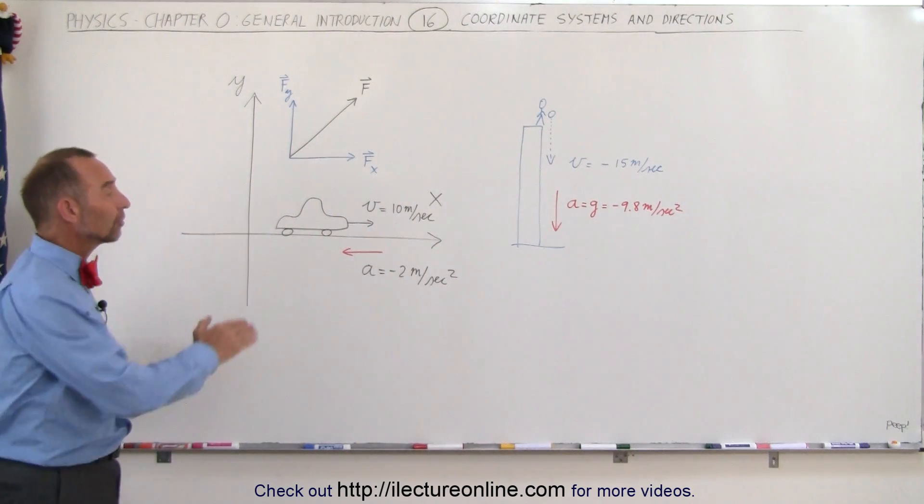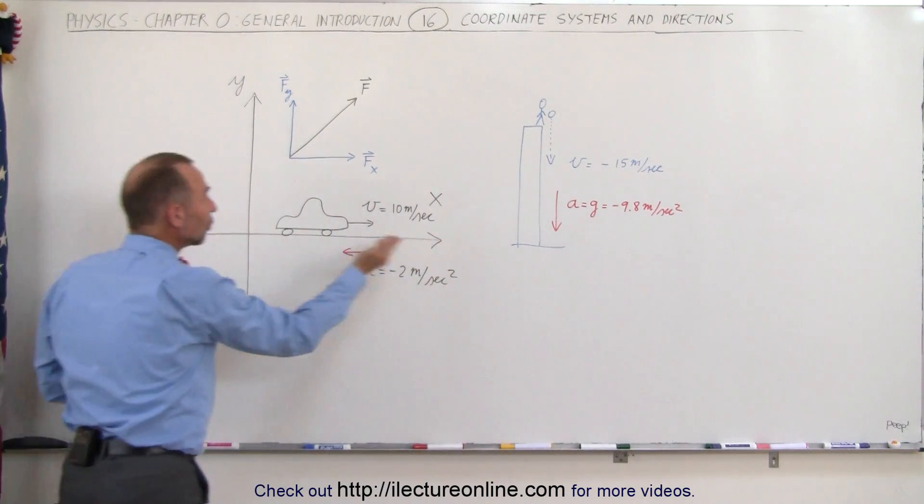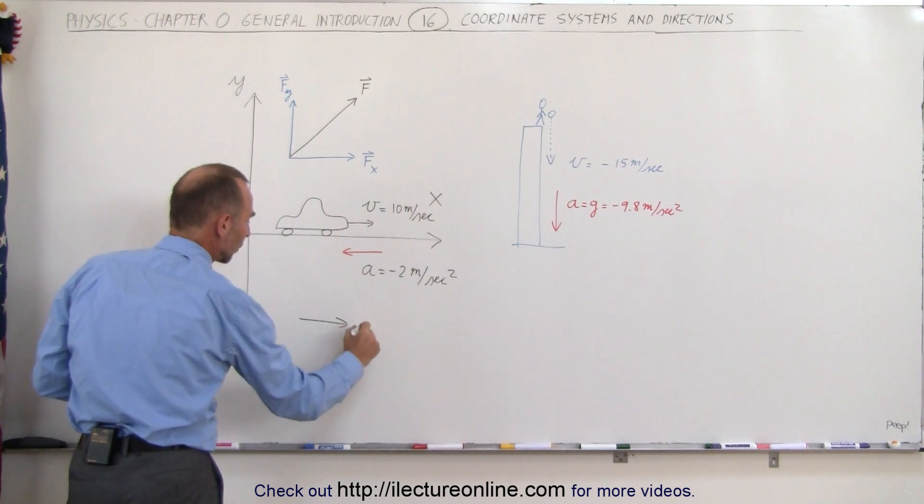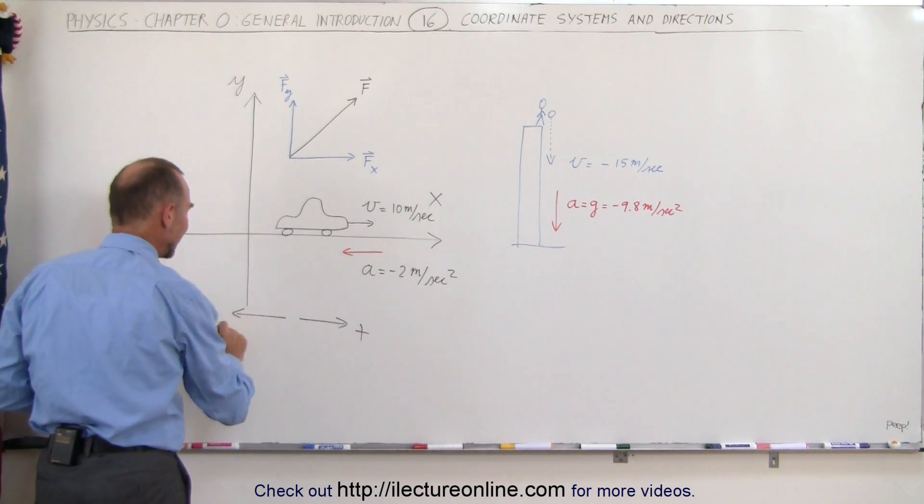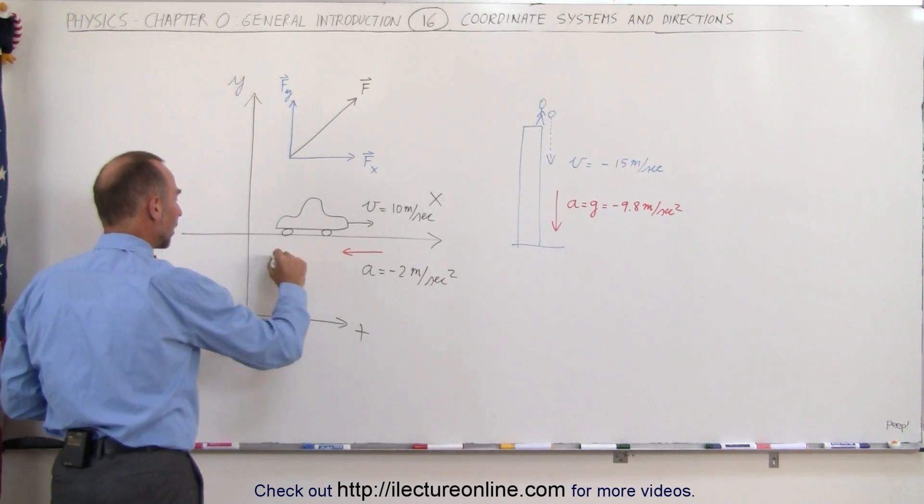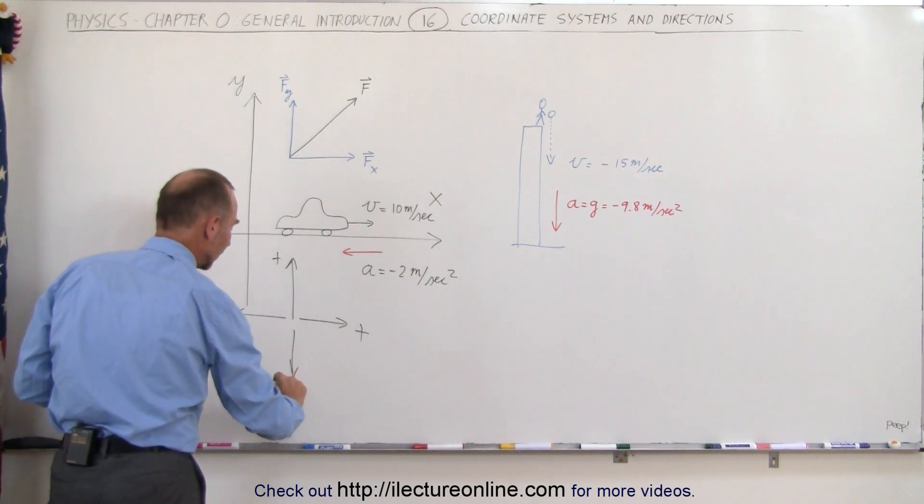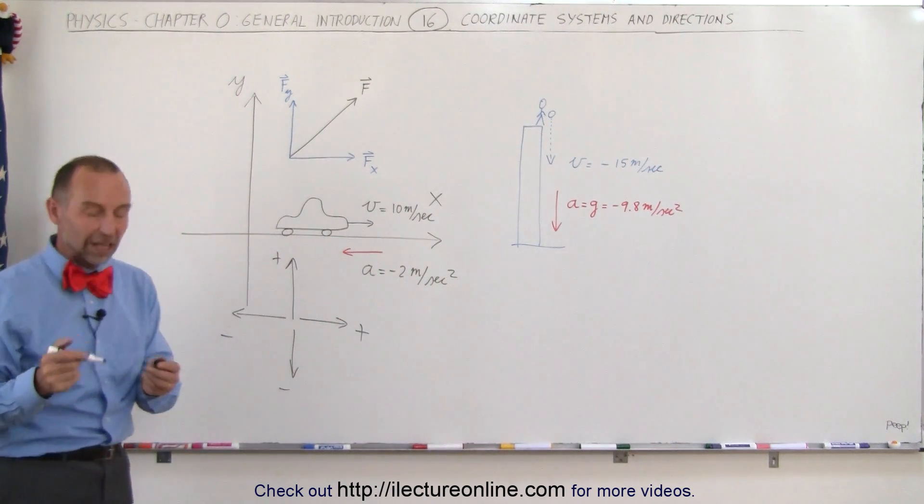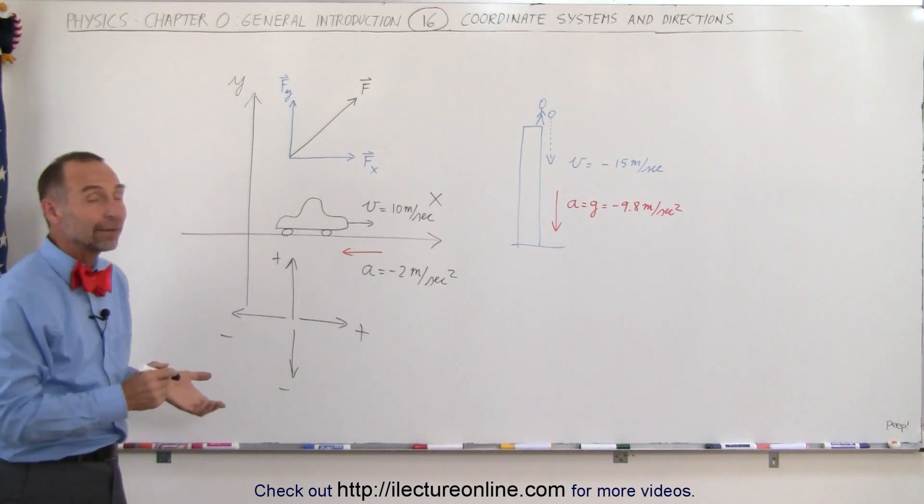Typically, we say that to the right it's positive, to the left is negative. So to the right would be positive, to the left would be negative, going up would be positive and going down would be negative. These are the conventional states of the direction and the appropriate sign according with that.